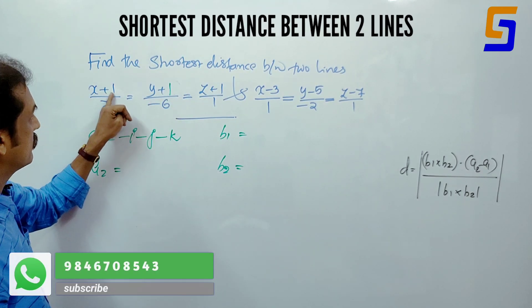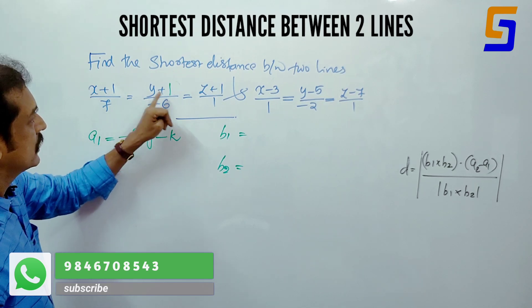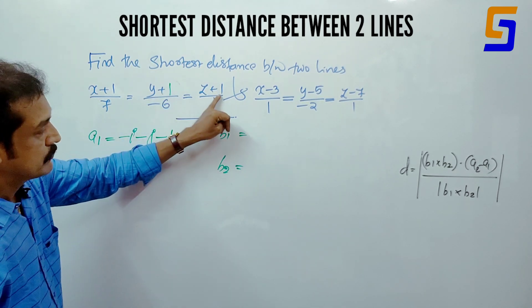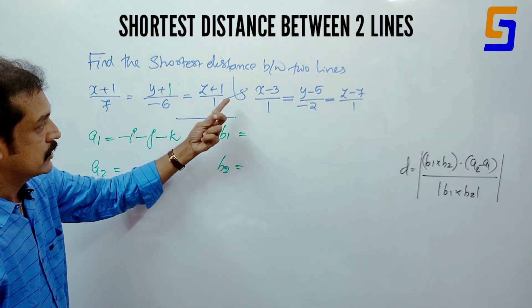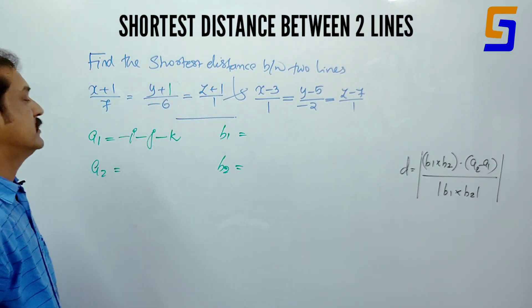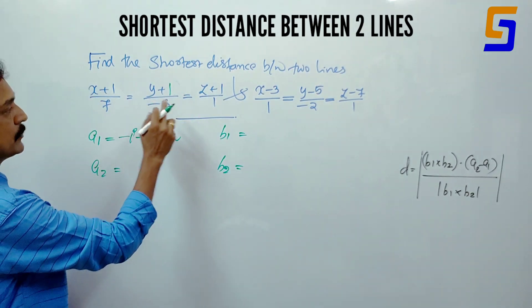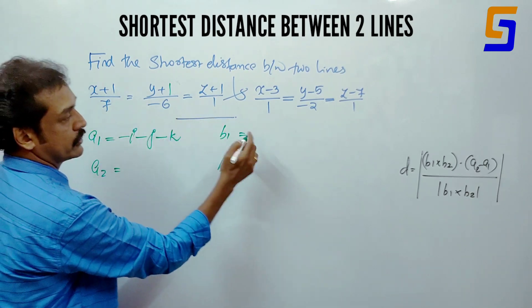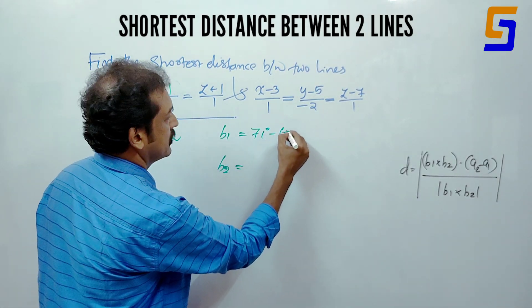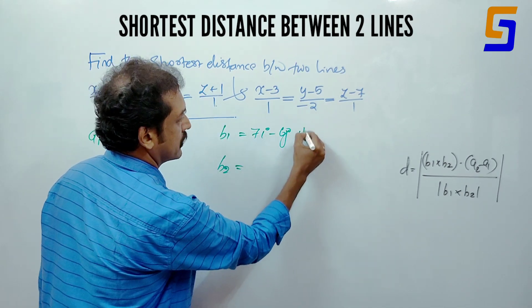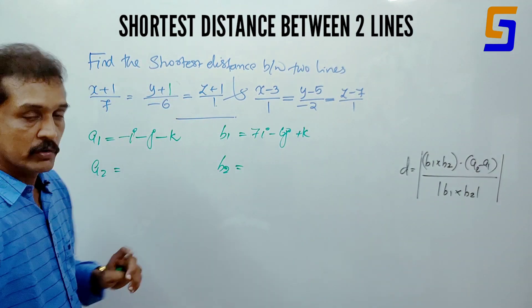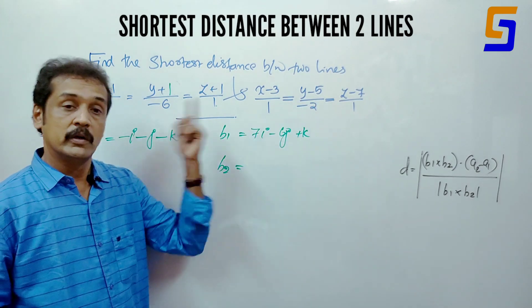Now for b1, the ijk components give 7i minus 6j plus k.